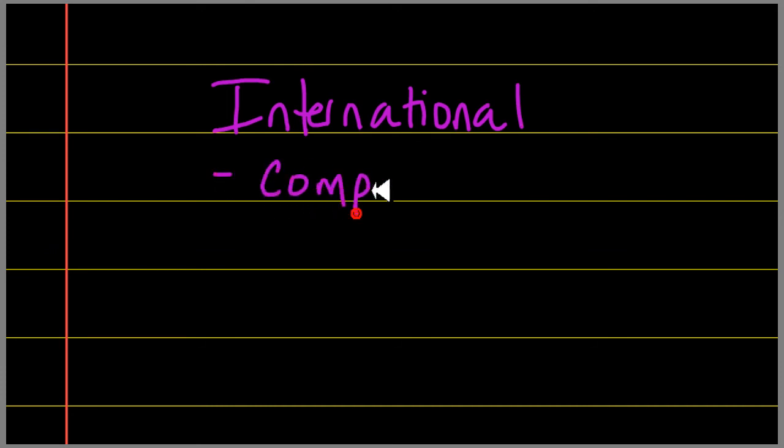One of the words that we've used several times has been international. For our purposes, international is going to be anything that is not the United States, in particular any companies that are not U.S. companies. We definitely have talked about the total stock market. We've definitely talked about owning that as one of our primary mutual funds. But in the total stock market, those are all U.S. companies. Sometimes in order to increase our diversification and spread out a little bit more, we'll want to bring in some international companies. So that's a term that you should probably know as well.